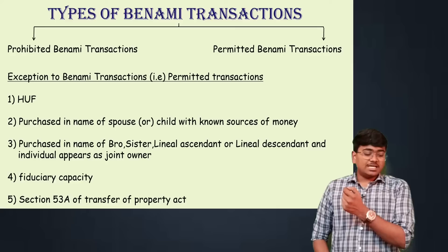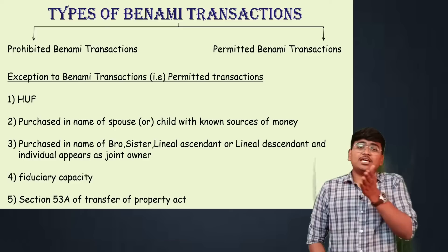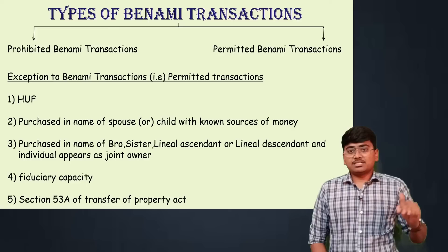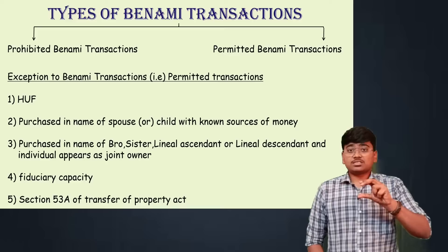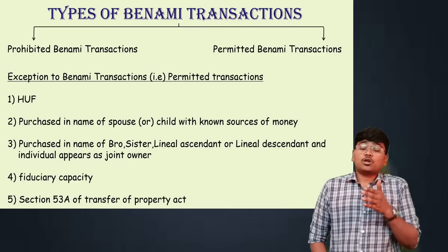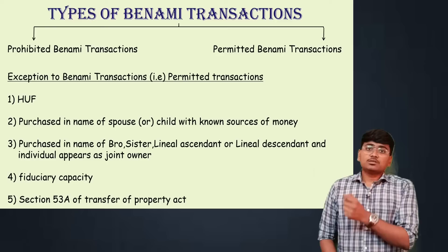The second exception is a property purchased in the name of a spouse or child with known sources of income. For example, if Mr. A has purchased a property in the name of his spouse or children, these are exempted benami transactions, provided that Mr. A has purchased from known sources of money. If the sources are unknown, it will be called a benami transaction. This is another exemption given under the act.